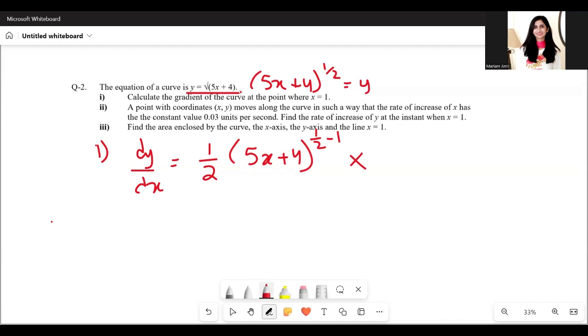The derivative of 5x + 4 is 5. So we have (1/2)(5x + 4)^(-1/2) times 5. I'm writing this as 5/2. In this we have to substitute x equals 1.